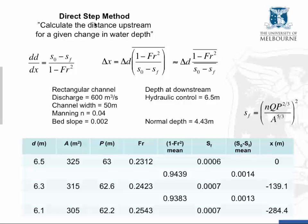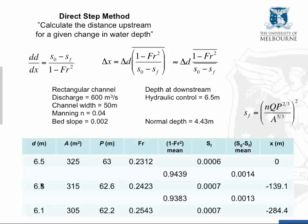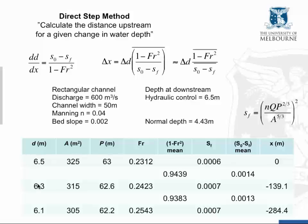This is the direct step method, so we're calculating how far upstream for a given change in water depth. We use a fixed depth change of 0.2 meters per step. Since depth decreases upstream toward normal depth of 4.43 meters, the next step gives a depth of 6.3 meters. We then calculate cross-sectional area, wetted perimeter, Froude number, and the average of 1 minus Froude number squared, which is 0.9439.